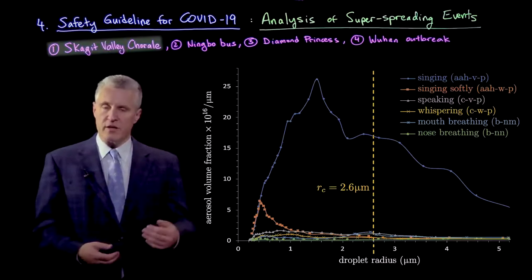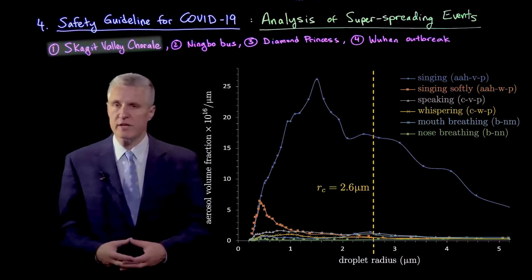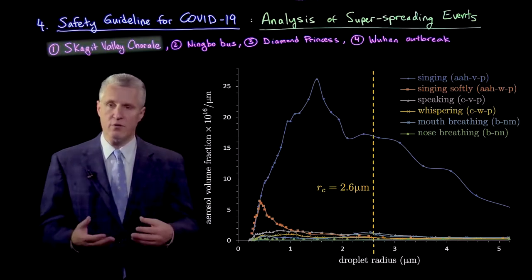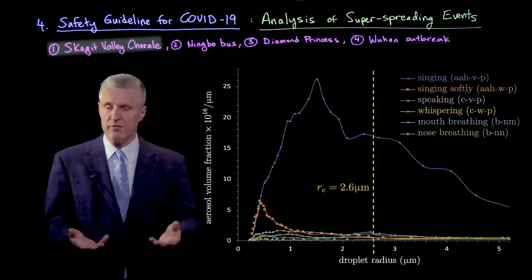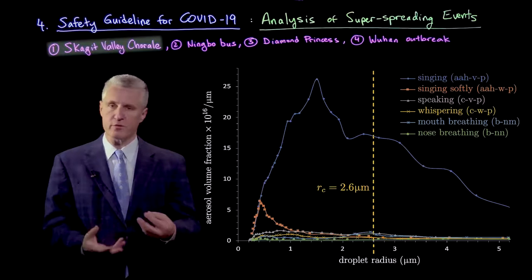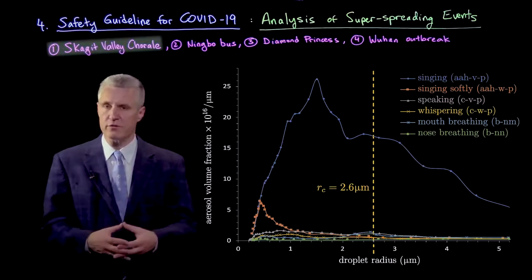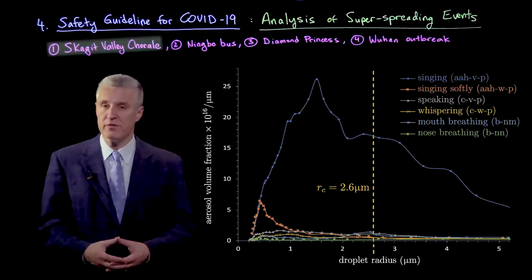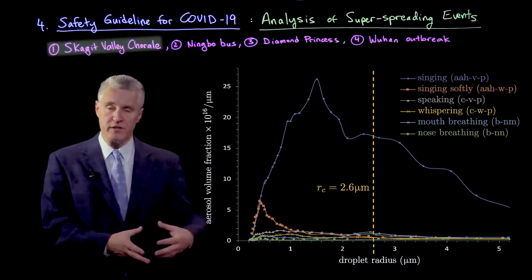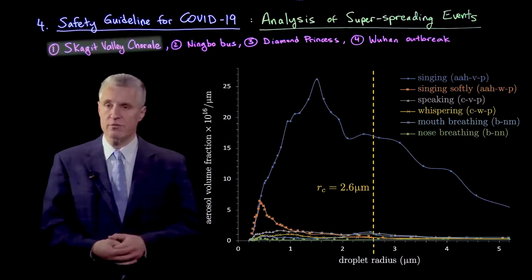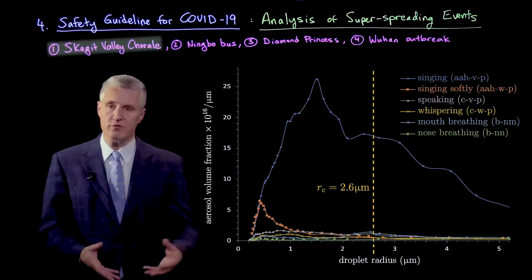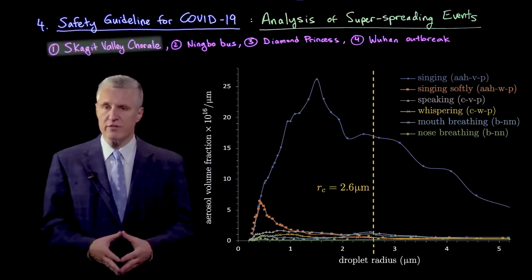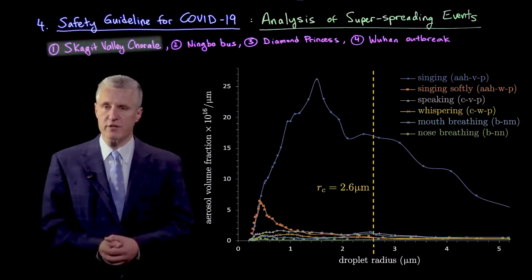Similarly, the other types of activities measured in the original study, which correspond to whispered ah, or speaking, or counting of numbers, or various forms of breathing through the nose and mouth, or only through the nose, all those distributions have much lower magnitude or number of drops. This is also drop volume—we have accounted for the size of the drops as well, so it's the total droplet volume per total volume, or volume fraction. The peak of all the distributions is in a similar place, just below 1 micron, corresponding to the aerosol range.